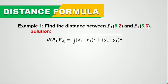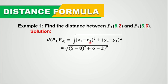Solution: the distance between point 1 and point 2 is equal to the square root of x sub 2 minus x sub 1 squared, plus y sub 2 minus y sub 1 squared. Substituting the values: x sub 2 is 5 and x sub 1 is 8, plus y sub 2 is 6 minus y sub 1 is 2.